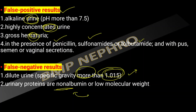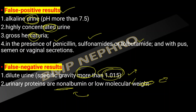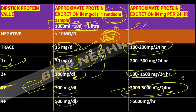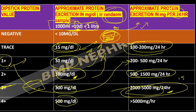Since the dipstick mainly detects albumin, non-albumin proteins or low molecular weight proteins may not be detected. This is an important diagnostic clue for multiple myeloma — the dipstick may be negative while the 24-hour urine quantification is positive, because the mechanism primarily detects albumin. A medicine resident should know the 24-hour estimate, while a DM or nephrology resident should be aware of both quantification types.